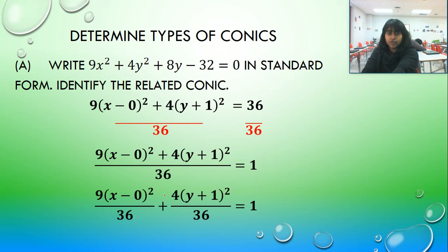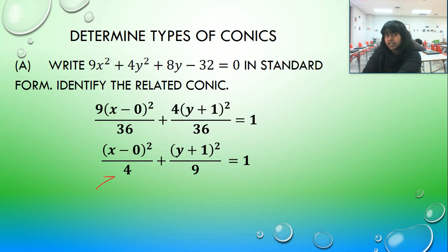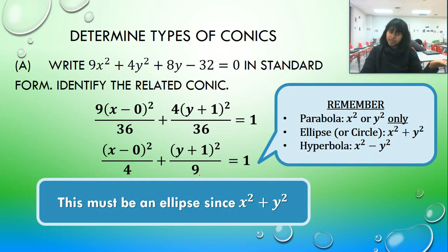9 over 36 is 1 4th. 4 over 36 is 1 9th. So we end up with this. x and y are squared. There's a plus in between. And denominators are visible. So this is most likely an ellipse. Must be an ellipse.